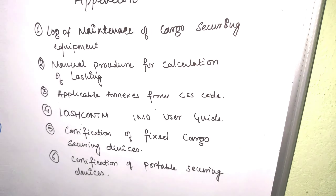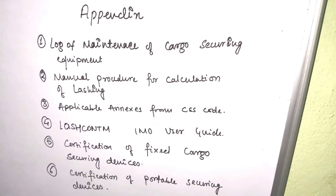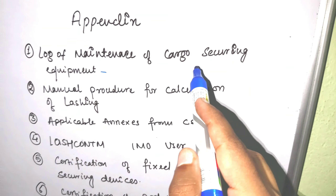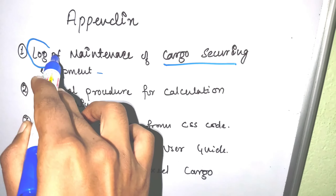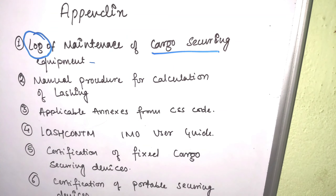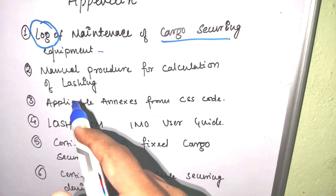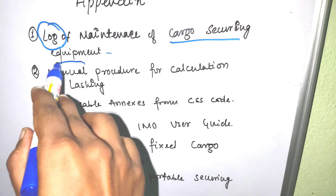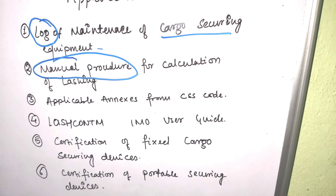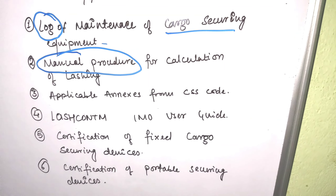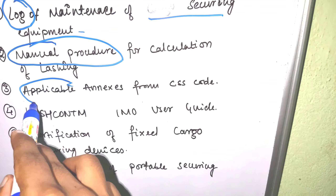Then we have the appendixes. Appendix one is the Log of Maintenance of Cargo Securing Equipment. Appendix two is the Manual Procedure for Calculation of Lashing, not by using a load indicator. Appendix three is the Applicable Annexes for CSS Code. Appendix four is the IMO User Guide. Appendix five is the Certification of Fixed Cargo Securing Devices, and appendix six is the Certification of Portable Securing Devices.